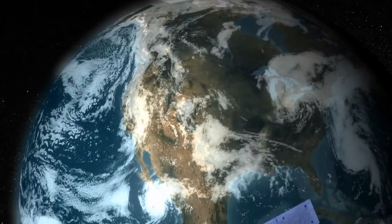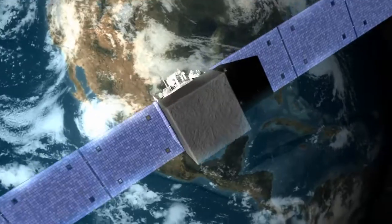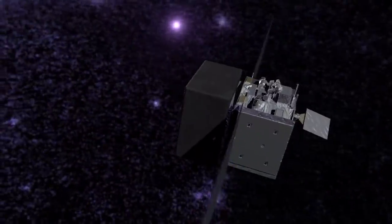The Fermi Gamma-ray Space Telescope is a powerful space observatory that opens a wide window on the universe. Gamma rays are the highest energy form of light, and the gamma-ray sky is spectacularly different from the one we perceive with our own eyes.